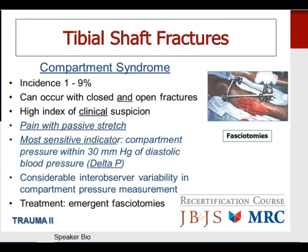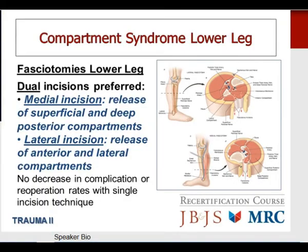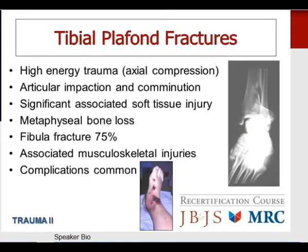Moving further down the extremity to tibial plafond fractures. These almost always result from significant high-energy axial compression to the ankle and distal lower leg. Articular impaction, comminution, and severe soft tissue injury are the rule. The fibula is fractured approximately 75% of the time, and associated musculoskeletal injuries are quite common. These injuries have a notoriously poor prognosis with common complications.